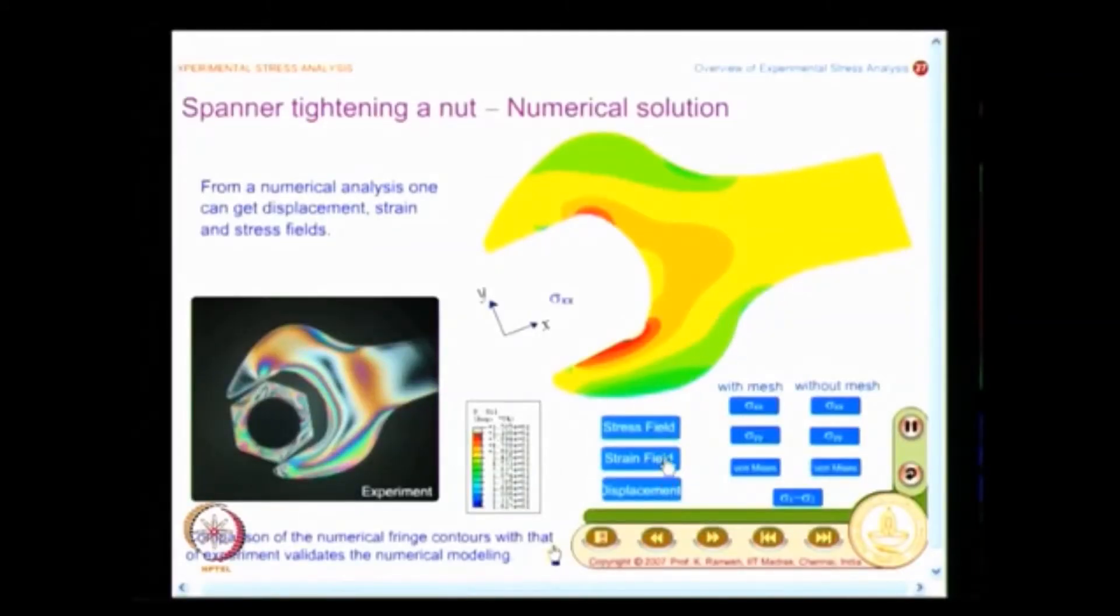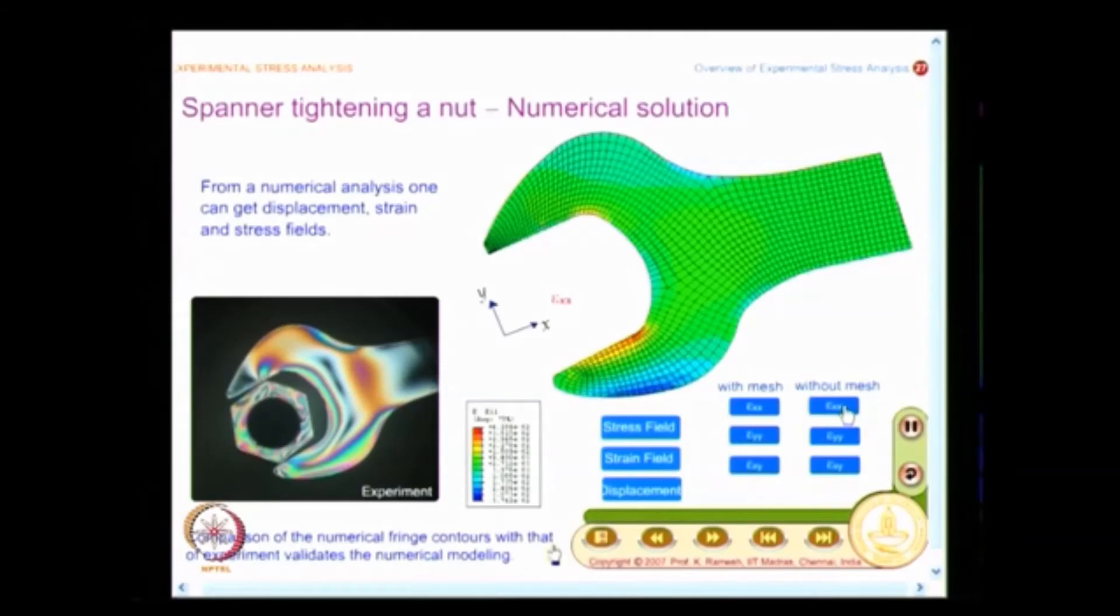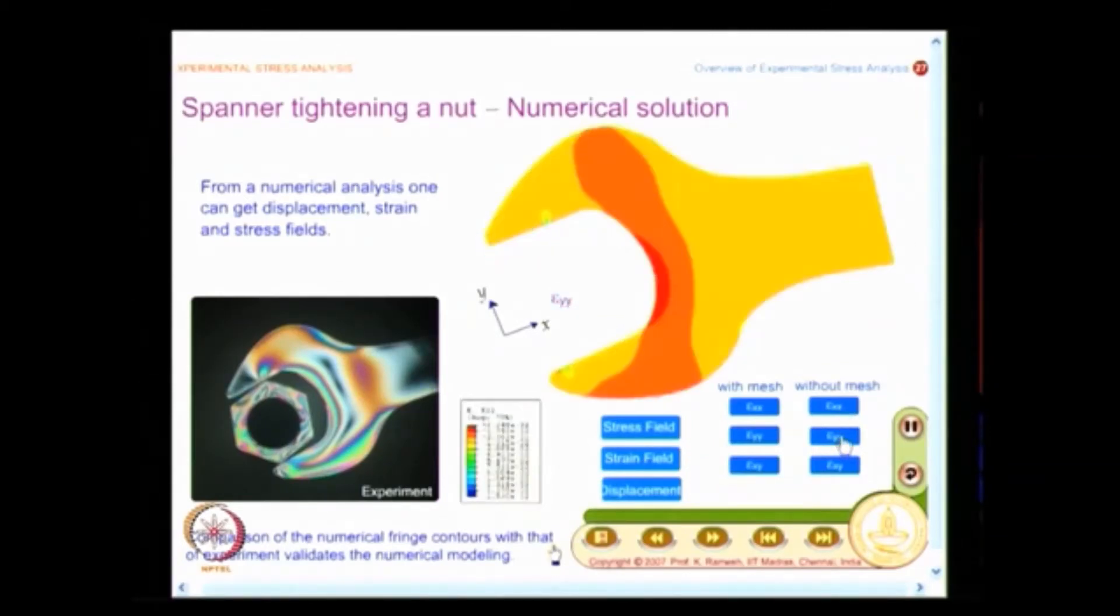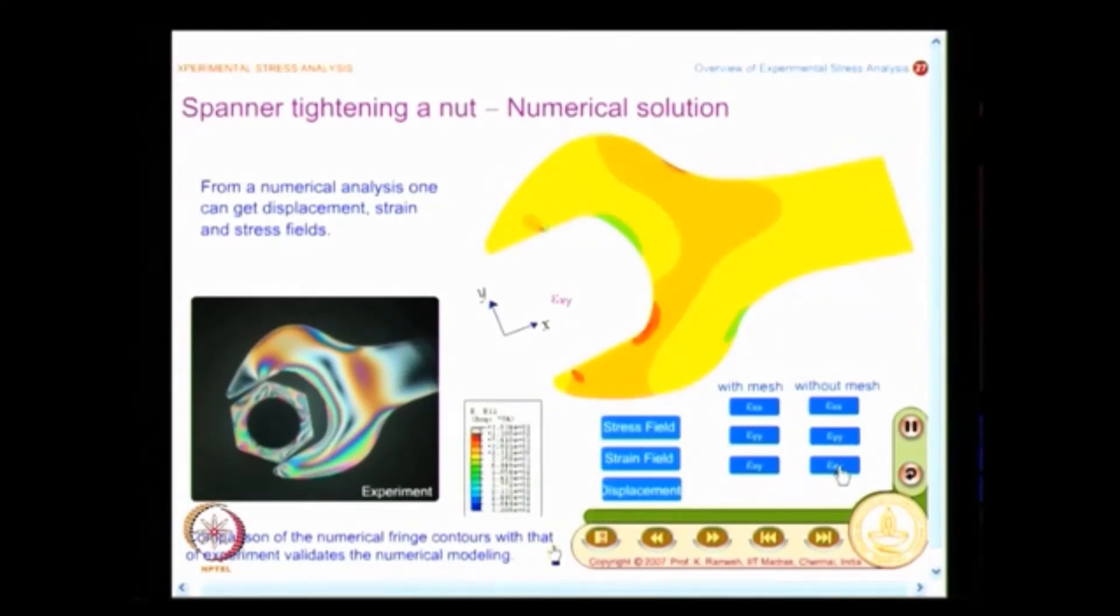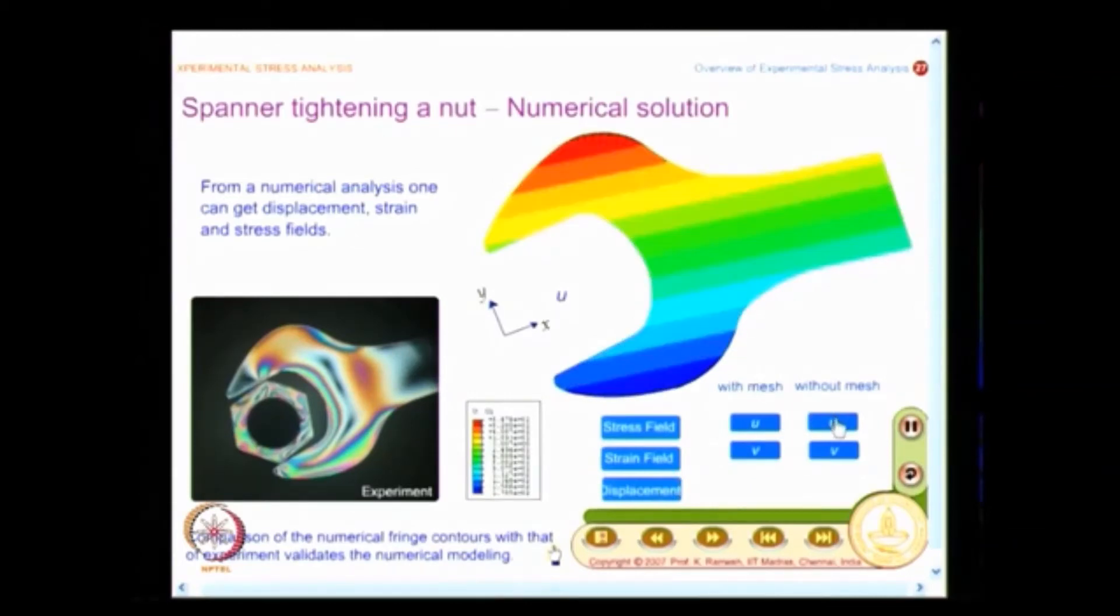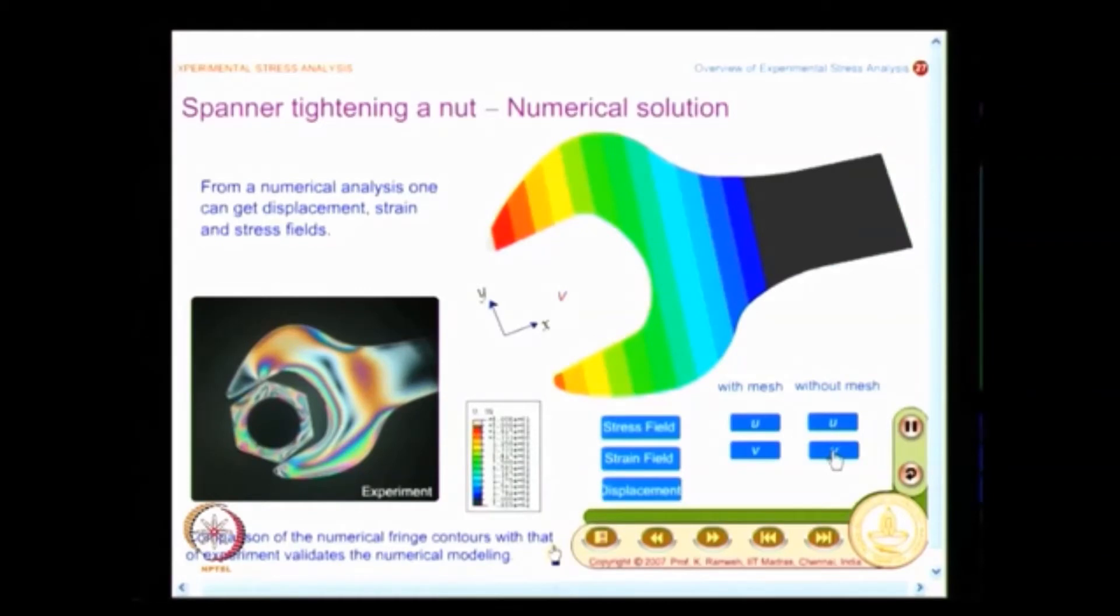So, I can also get the strain field and till now you are not seen strain field as a plot and this is with mesh and you can also see without mesh, this is epsilon xx. Similarly, I can get epsilon yy, I can also get shear strain epsilon xy. I can also go and see the displacement field and this is what I get here, I have the u displacement, I also have the v displacement.